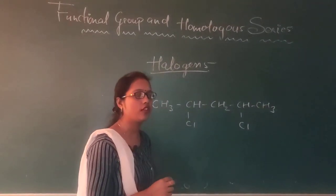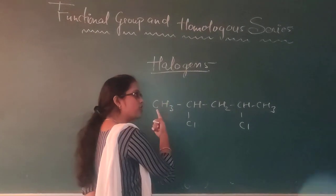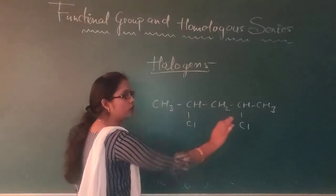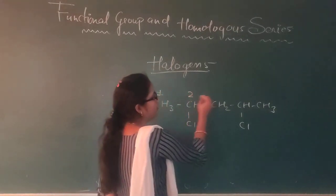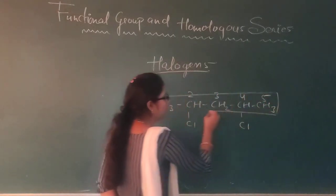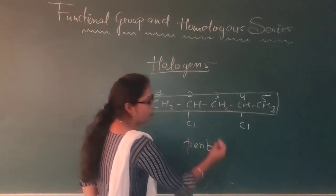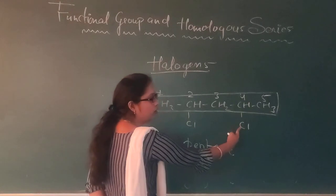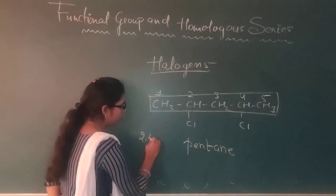Ab is compound ka humko IUPAC nomenclature karna hai. First rule kya hota hai — carbon chain ko aapko numbering deni hai. Aap idhar se bhi start kar sakte ho: one, two, three, four, five. Aap udhar se bhi start kar sakte ho: one, two, three, four, five. Because from both sides, chlorine second carbon par raha hai, toh aap kahin se bhi numbering de sakti ho. Five carbon chain means 'pent', single bond between carbon means 'an', so 'pentane'. Ab aap dekho is mein kaunsa functional group laga hai — chloro — and position of chloro functional group is two and four. Toh hum usko as a prefix likhenge: 2,4-dichloropentane.